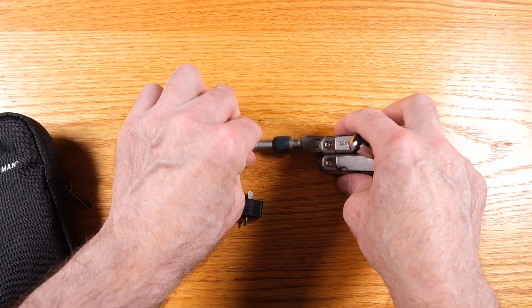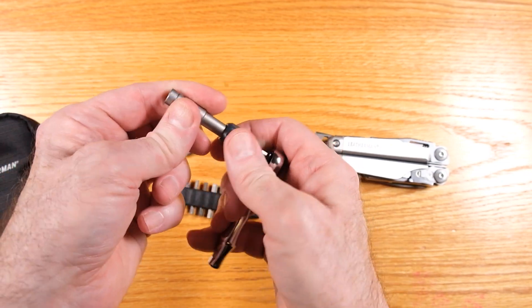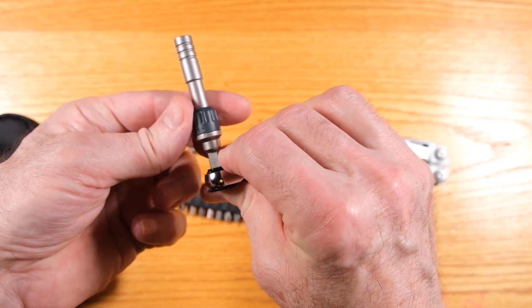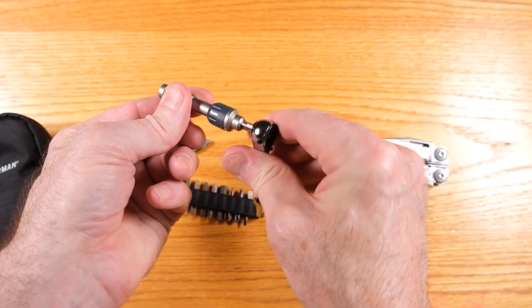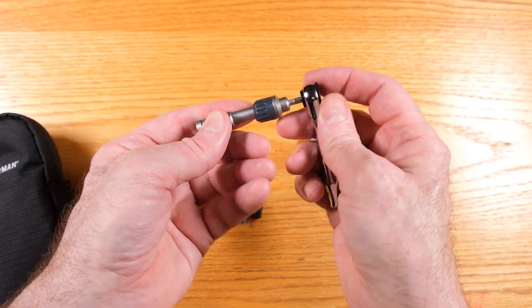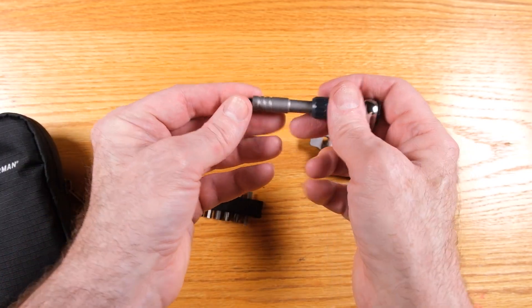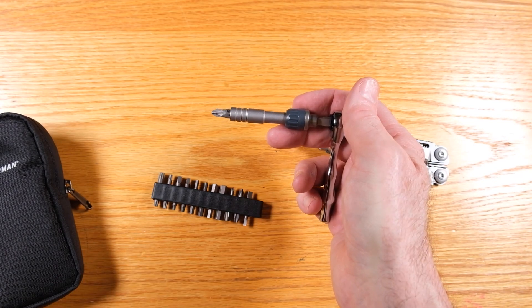And this bit holder, bit extender goes into this as well. Now at that point, you would want to lock this and then you could use the ratchet on here. And it's got a little knurled knob on here, if you want to turn this. So you put your bit in here and you've got an extension with a socket.